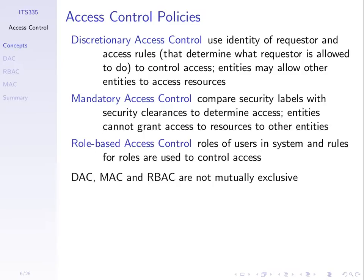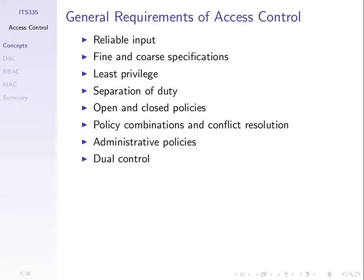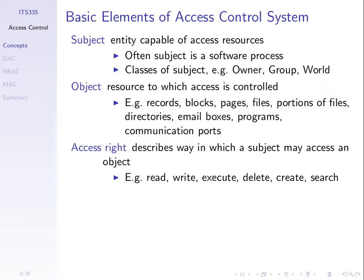There are three main policies for access control: discretionary, mandatory, and role-based. We briefly introduced discretionary last lecture; we'll go through the others and talk about the differences between them with a couple of examples. They can be combined — the concepts in each can be combined in a particular computer system; they're not mutually exclusive.